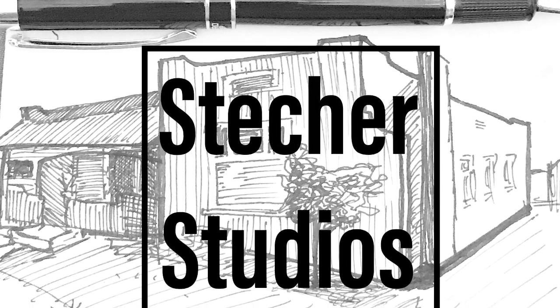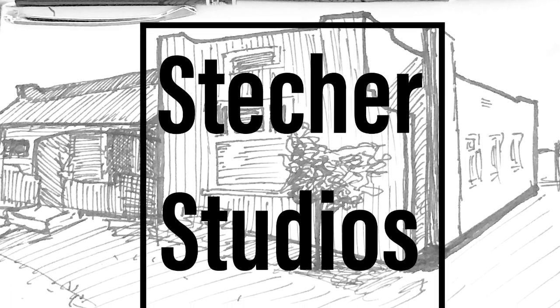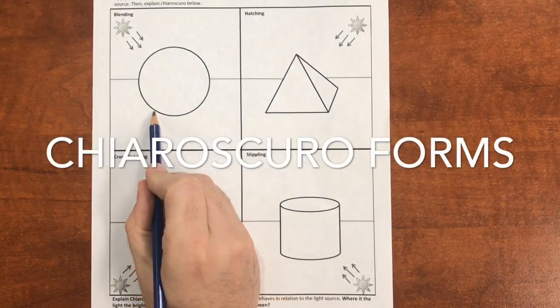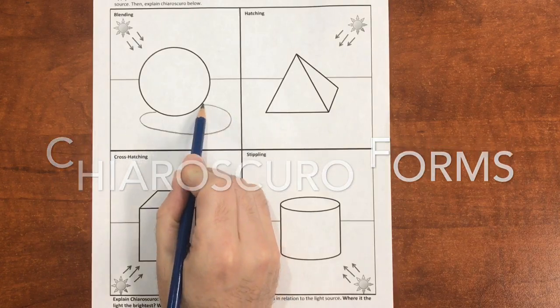In this episode of Stecker Studios, we're practicing chiaroscuro by adding value to a series of forms using blending, hatching, cross-hatching, and the stippling technique.